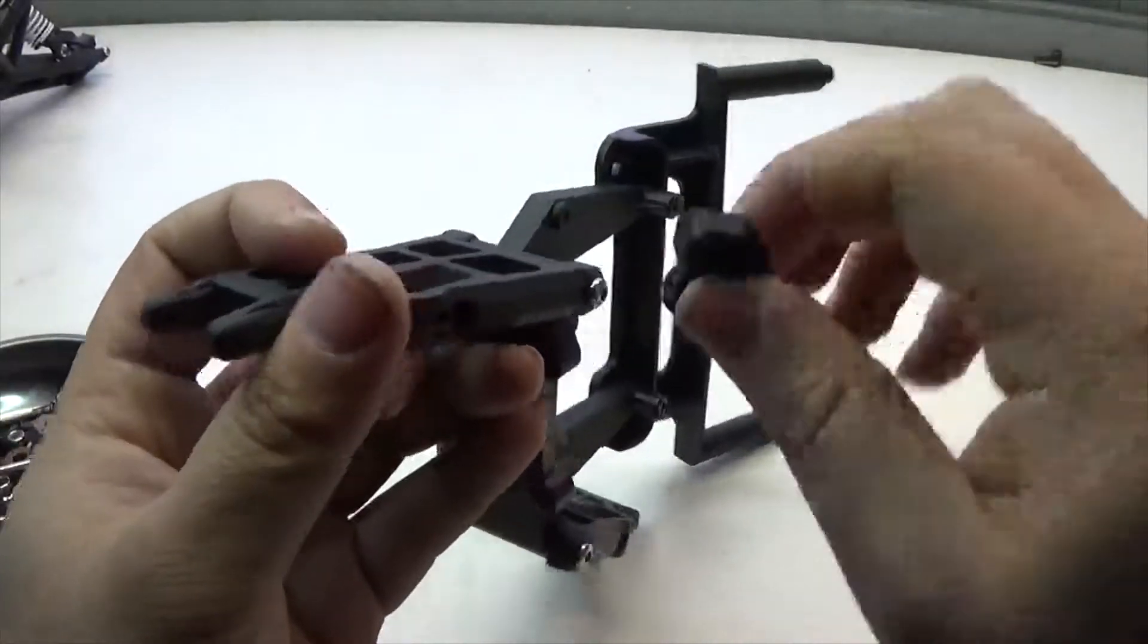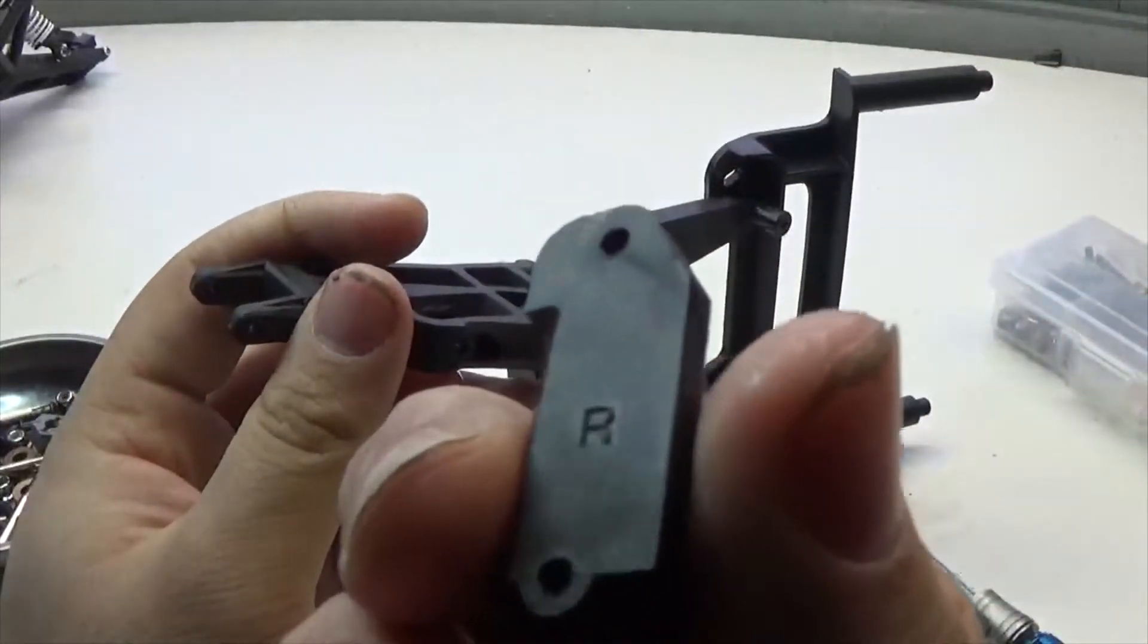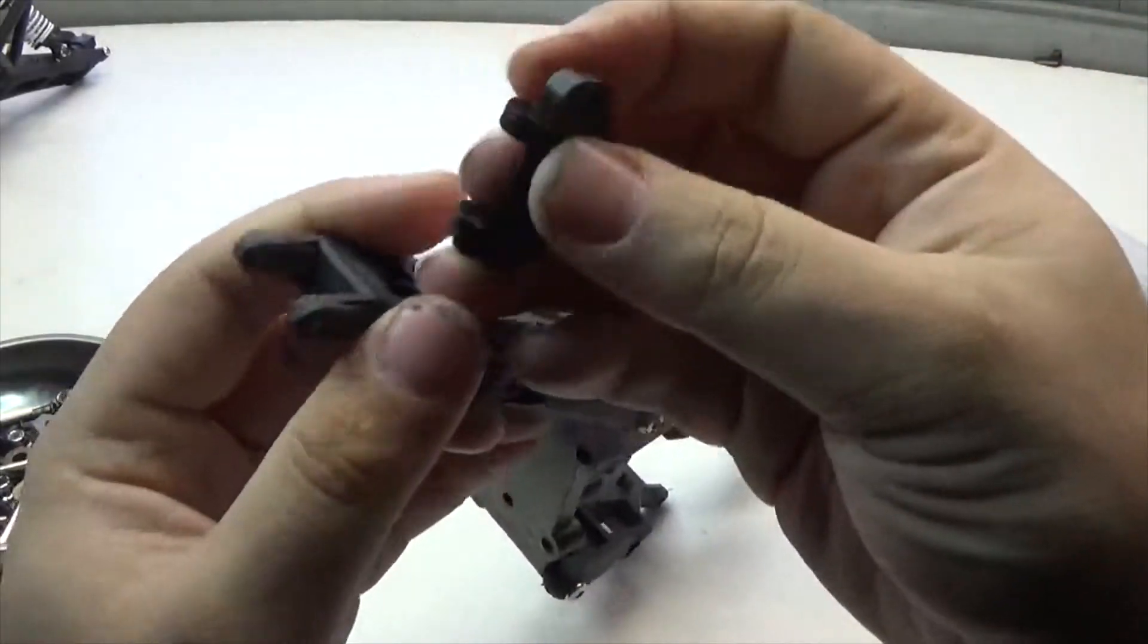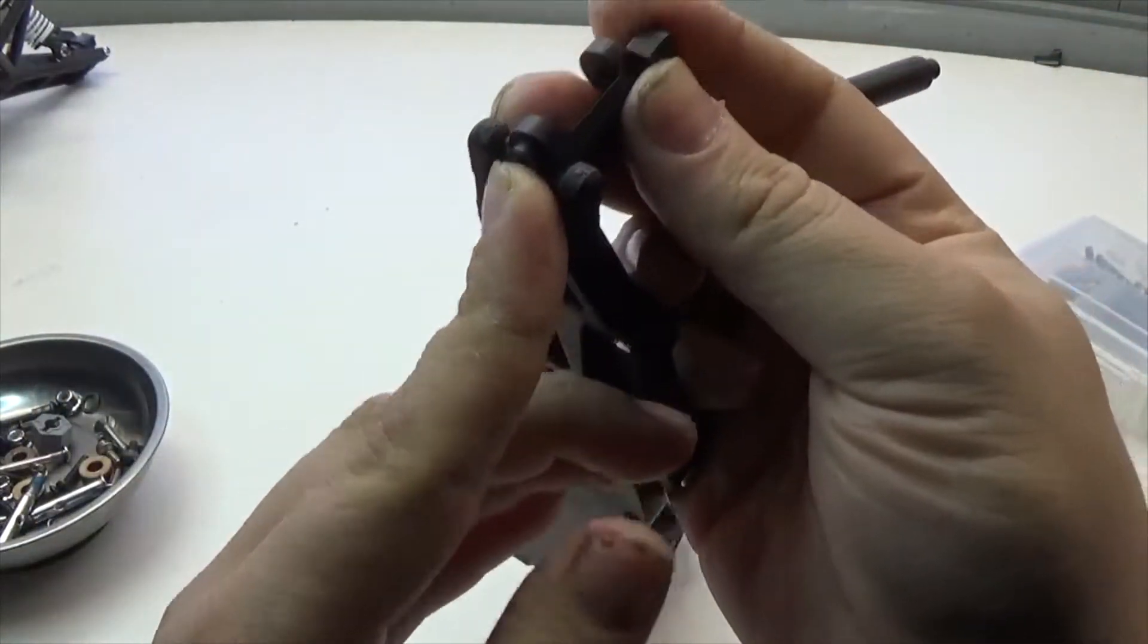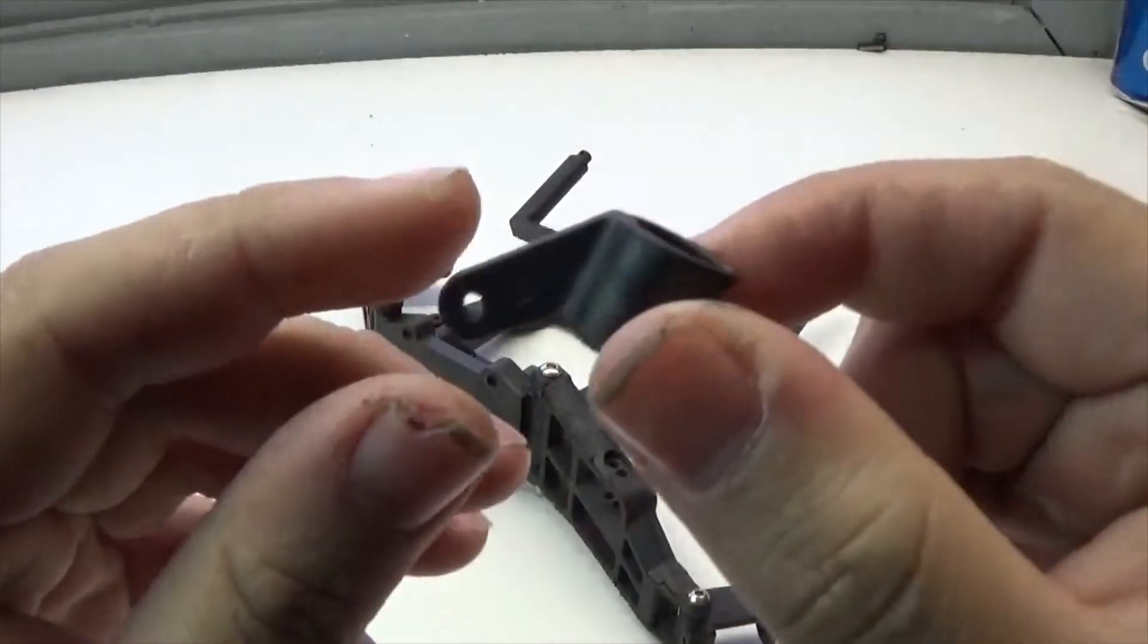Now that we have our a-arms in place, I'm going to take our caster blocks, depending on which one we have right or left, going to slide them right in their spot on the a-arm and put down the one kingpin that holds them in place.